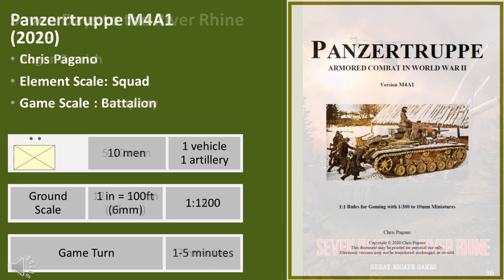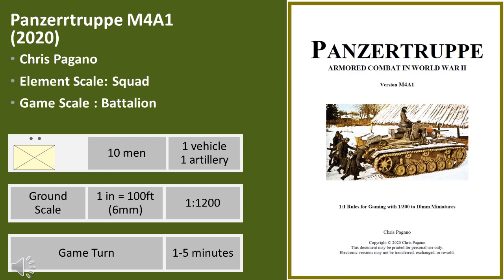Panzertruppe is a simple set of rules, with about 25 pages of actual rules. It uses a mixed I-go you-go sequence of play, with the Axis moving, followed by the Allies firing and then the Axis firing, with the sequence repeated in reverse. The fire combat uses a hit system followed by a damage system and takes into account side and rear armour. As a Panzer IV can cover 200 metres in a game turn, it's probably 1 to 5 minutes per game turn, putting these rules close to skirmish scale.